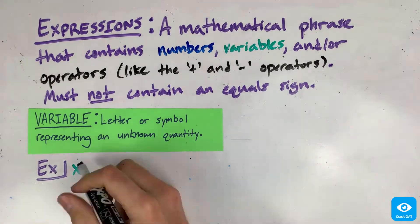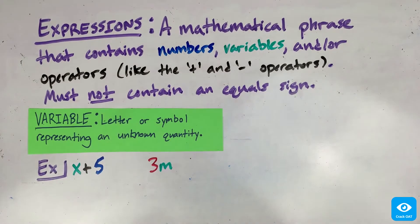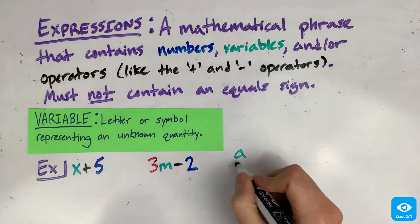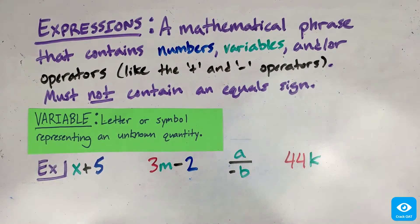So for example, x plus 5, 3m minus 2, a divided by negative b, 44k, and 59 plus negative 3 are all expressions.